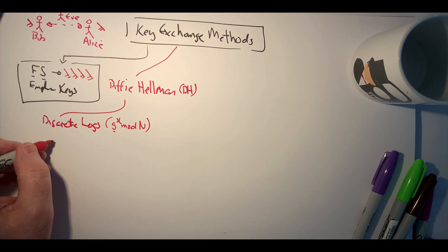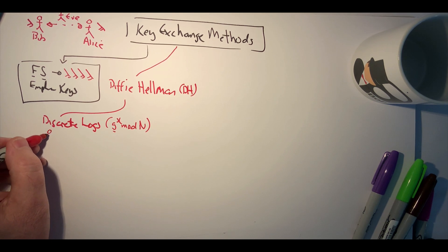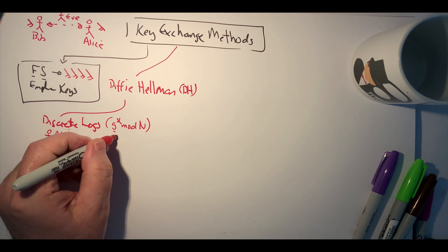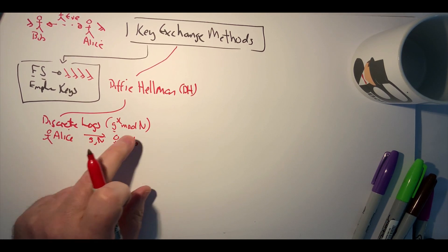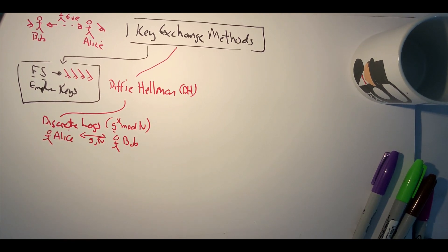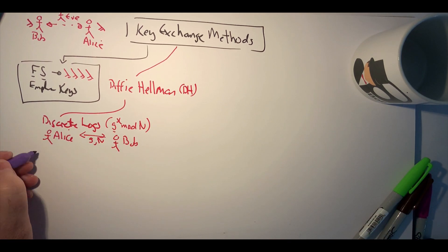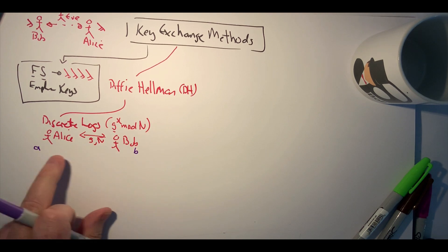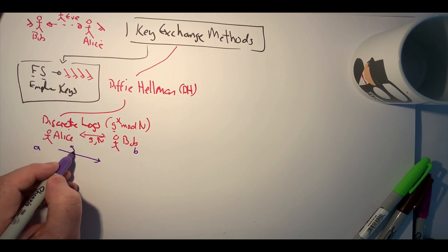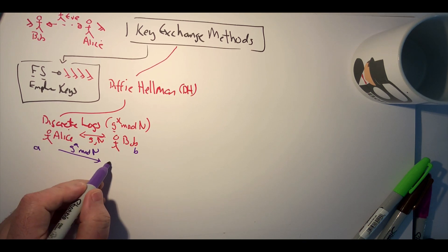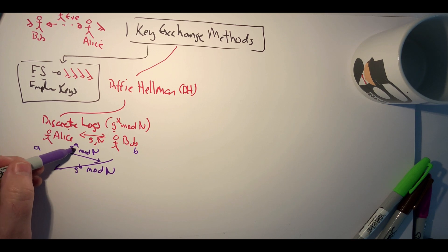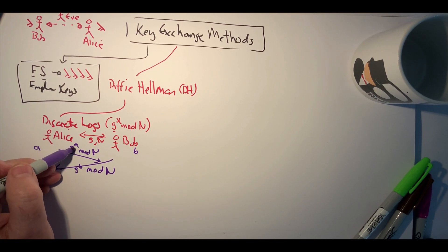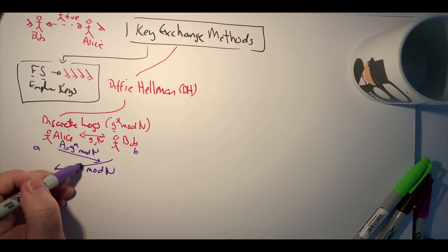With discrete logs, Alice and Bob agree to use g and n before the key handshake. Then Alice generates a random value a and Bob generates a random value b. Alice passes g^a mod n and Bob sends g^b mod n. Because of the difficulty of discrete logs, Bob cannot determine a and Alice cannot determine b — we call those big A and big B.